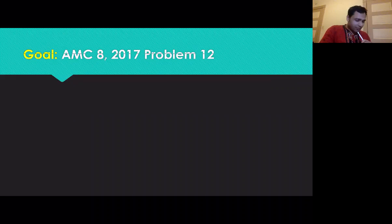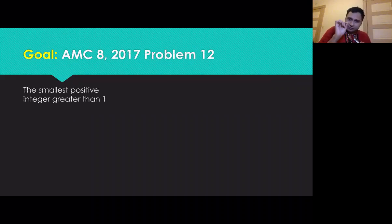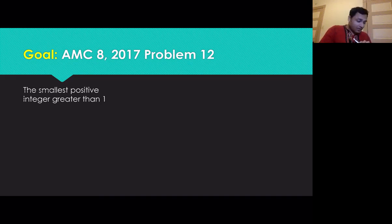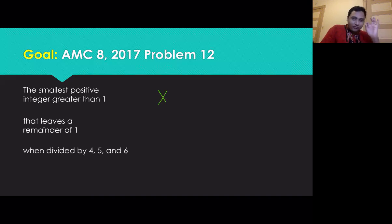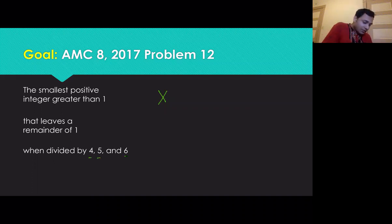Let's look at this problem quickly. Find the smallest positive integer greater than one — call it X — such that it leaves a remainder of one when divided by four, five, and six.